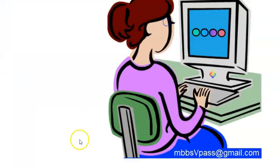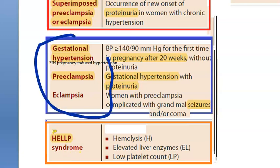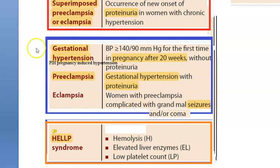If a woman already has hypertension and develops proteinuria, she is called superimposed preeclampsia. Preeclampsia means she was fine before pregnancy, then developed gestational hypertension with proteinuria. If that preeclampsia patient develops seizures or goes into a coma, it is called eclampsia. Gestational hypertension, preeclampsia, and eclampsia all indicate she was perfectly fine before the pregnancy.